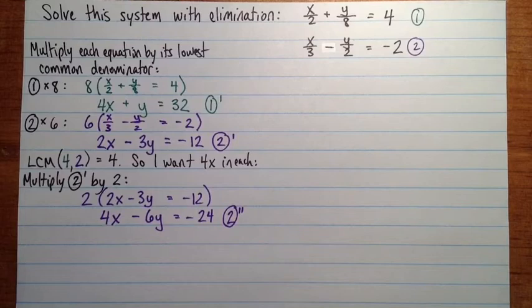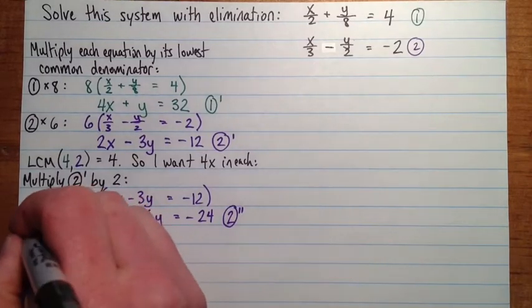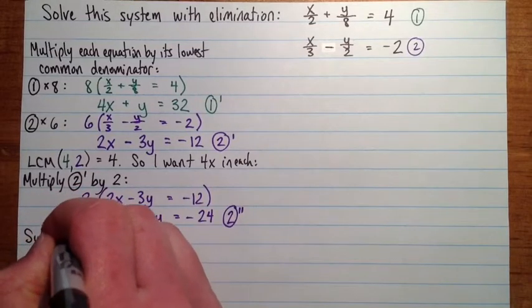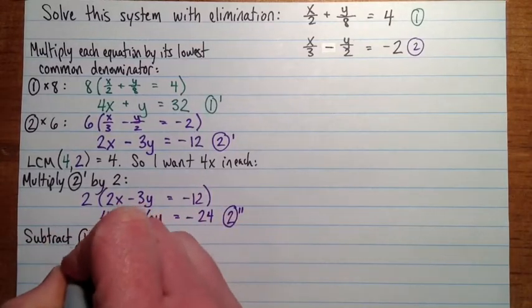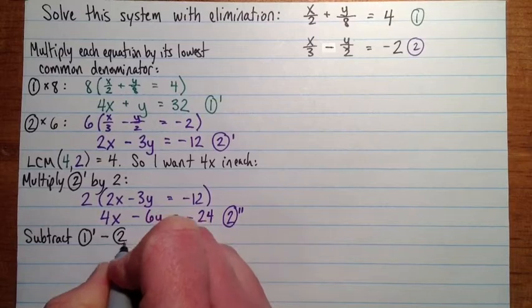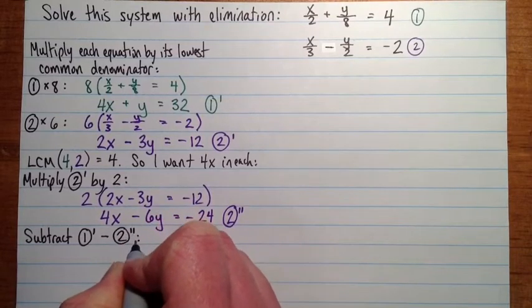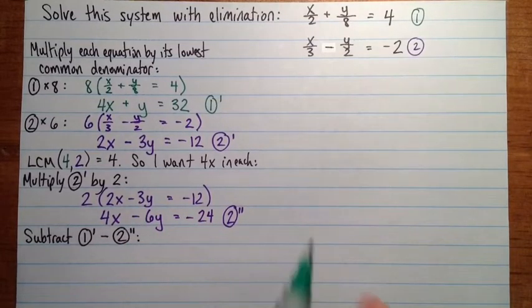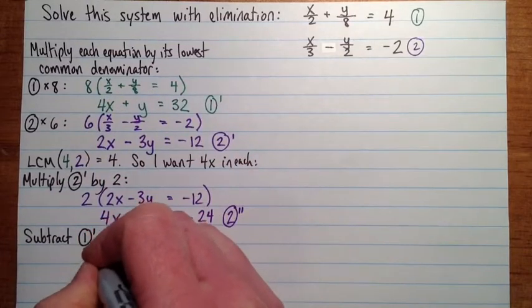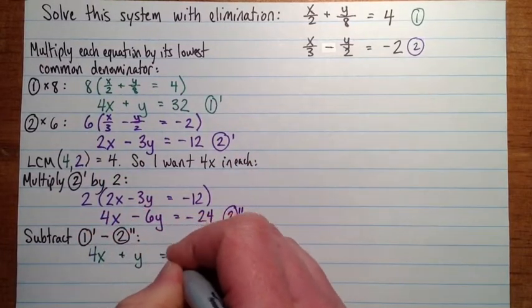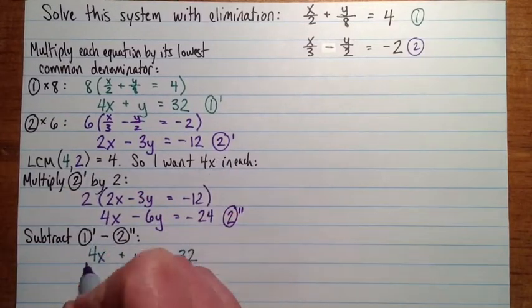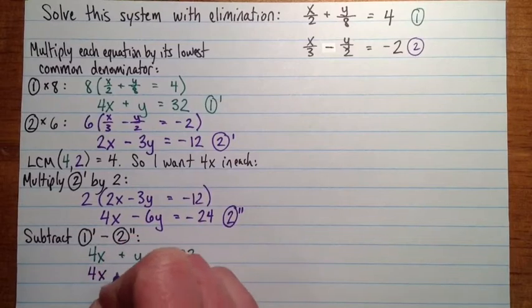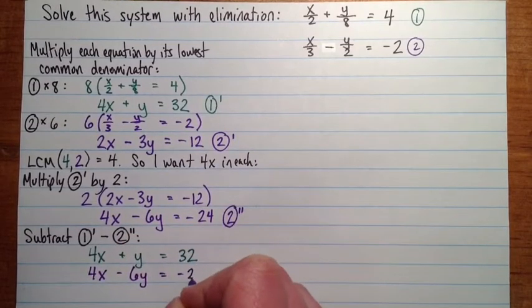I try to do the one that just kind of avoids more negatives. I'm going to subtract. I think it will have fewer negatives if we do 1 prime minus 2 double prime. So what that gives us is we've got 4x plus y equals 32. And we're subtracting 2 double prime, which is 4x minus 6y equals negative 24.